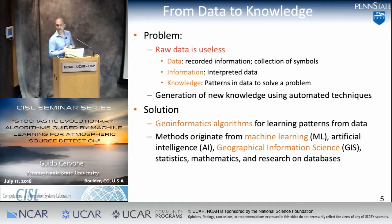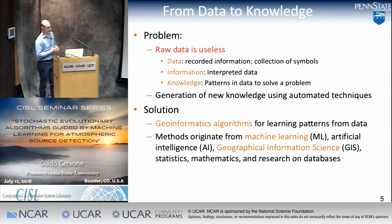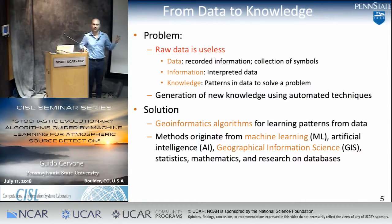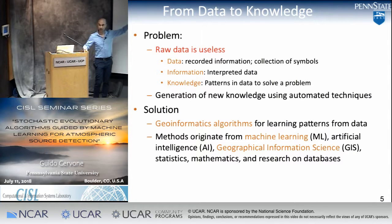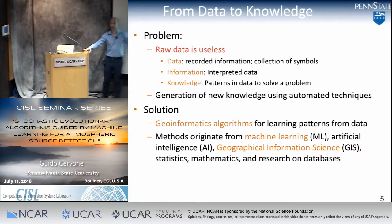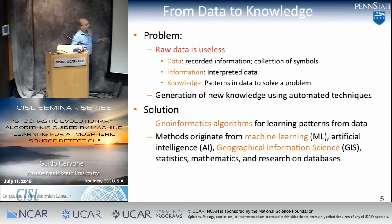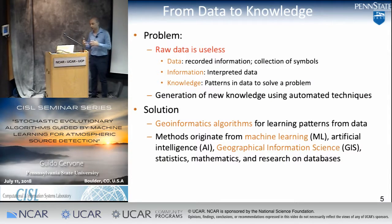Let's start with some definitions. First of all, raw data is useless — data are just recorded information, nothing else than a collection of symbols. What we want to do is interpret those data and symbols — we call that information — and then use the patterns in the information to solve a problem — we call that knowledge. This is the process of going from data to knowledge, and this is where Geoinformatics algorithms come into play: they can learn patterns and we can use them to solve a problem.